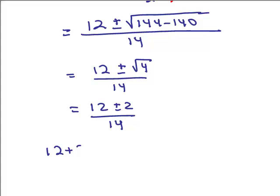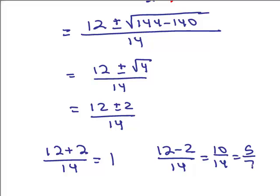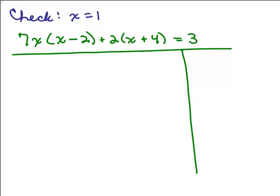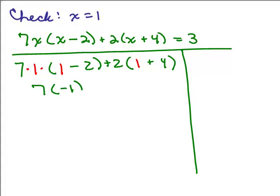From those two expressions we get 14 over 14, or 1, and 10 over 14, which is 5 sevenths. Let's check X equals 1 in the original equation — pause and try it yourself first. Plugging in 1 for X: 7 times 1 times (1 minus 2) plus 2 times (1 plus 4) equals 7 times negative 1 plus 2 times 5, which is negative 7 plus 10, or 3. The left side equals 3 and the right side is 3, so it checks.